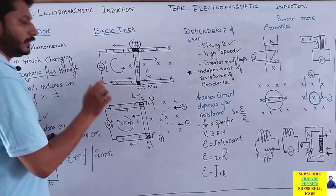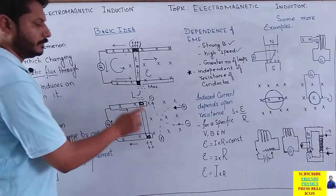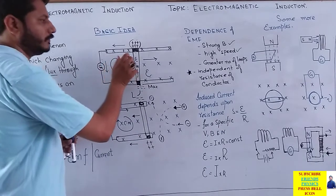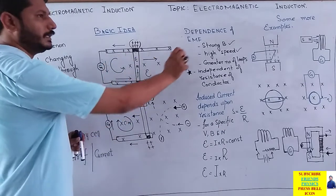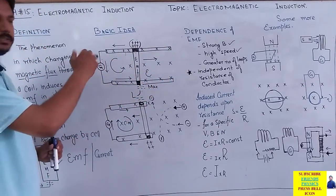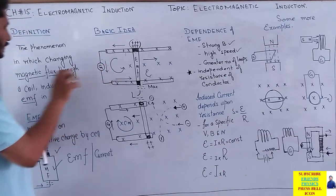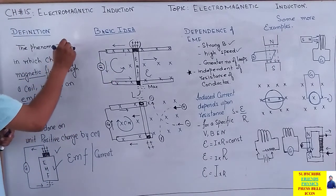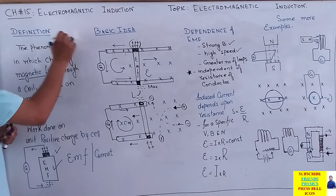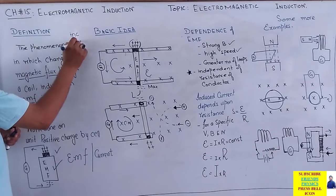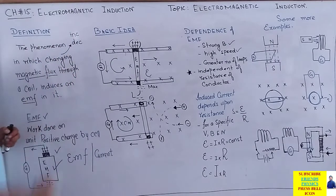Forward direction میں یعنی positive x-axis کی طرف لے جانے پر current anti-clockwise induced ہوا، negative x-axis کی طرف لانے پر current clockwise induced ہوا۔ اس کا مطلب ہے کہ current direction dependent ہے اس پر کہ آپ flux increase کر رہے ہیں یا flux decrease کر رہے ہیں۔ Change کا word یاد رکھیں — اس کا مطلب increase بھی ہو سکتا ہے اور decrease بھی۔